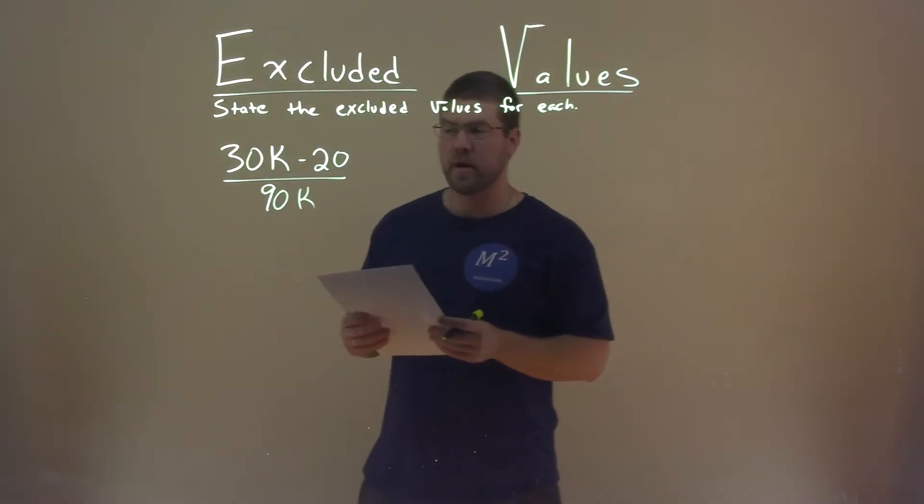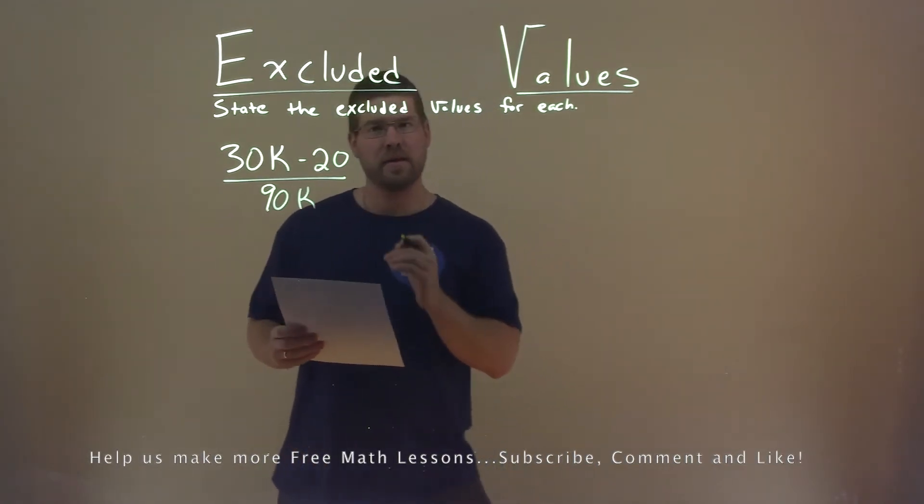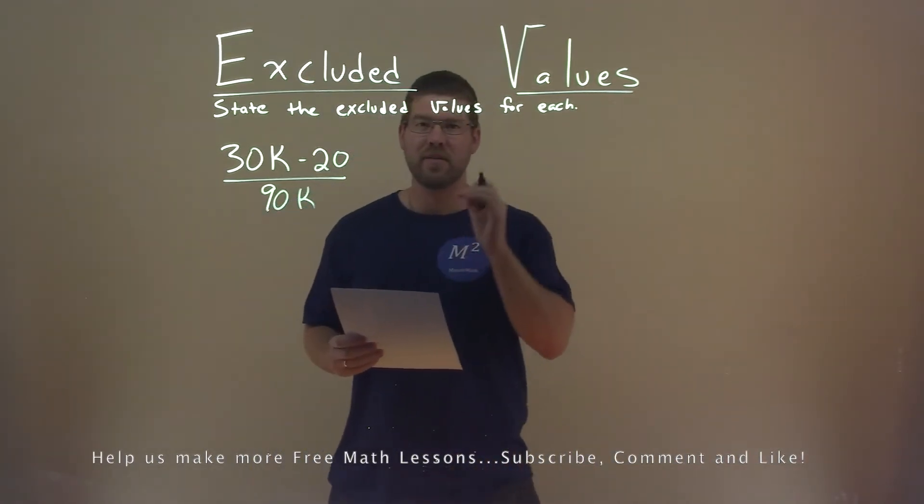We're given this problem right here, 30k minus 20 over 90k, and we want to state the excluded value.